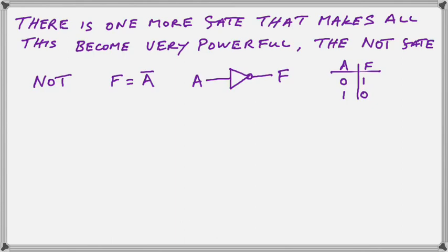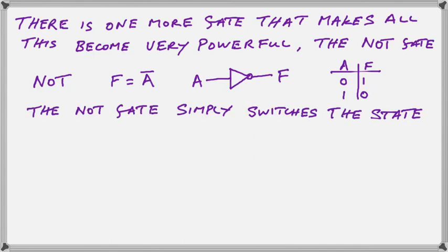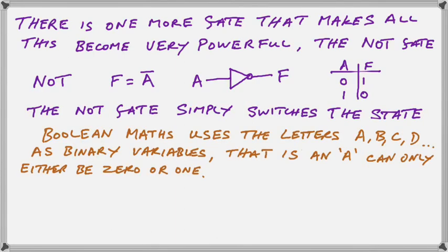That just does that operation and we mathematically express that by putting a bar over our input variable. Okay we've used the letter A and B quite freely in these videos but the letters, the capital letters of the alphabet, are used as binary variables. So when we write an A we may not know what is inside of that A but it can only be either a zero or one. Okay so keep in your mind when you see the letters A, B, C, D, E, F, G, and X, Y, and Z that these letters can either be a zero or a one. And you should be well on the way to success.